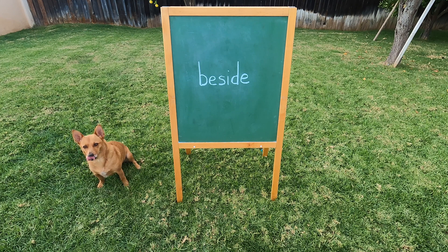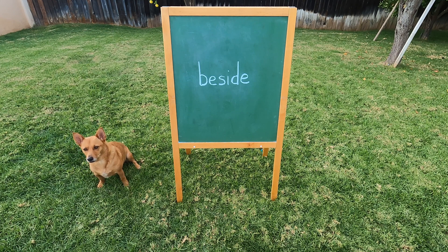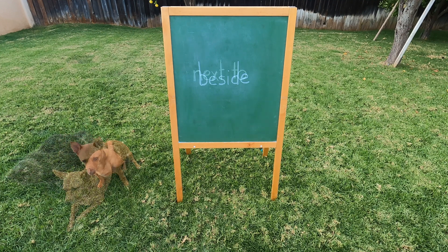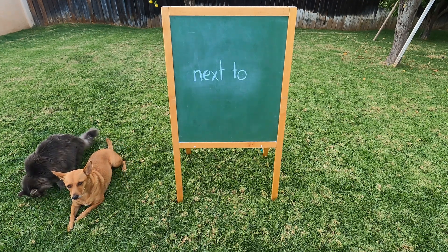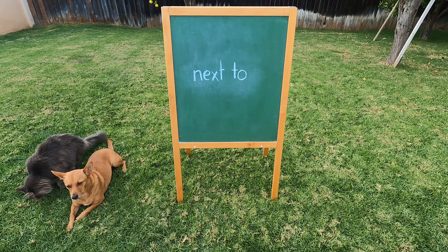Beside — Ginger is beside the easel. Next to — Axel is next to Ginger.